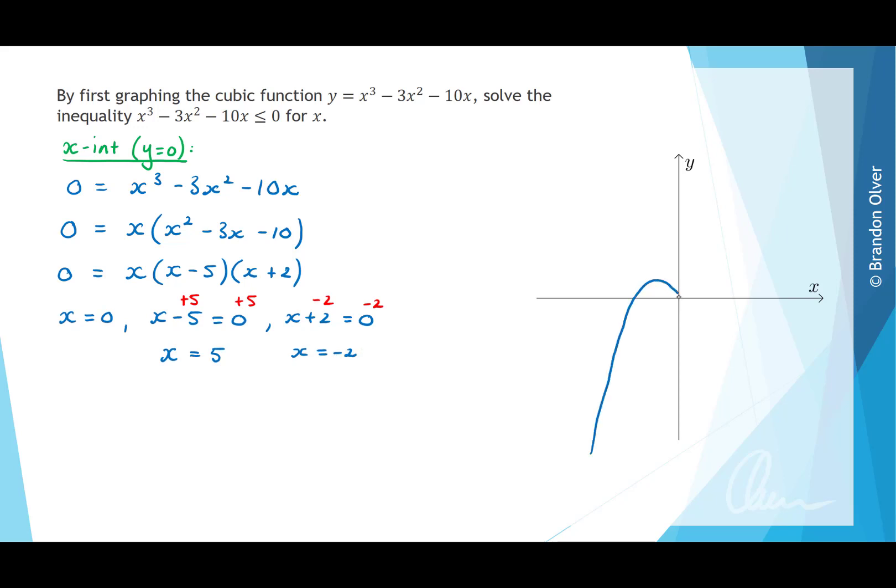So this is a positive cubic graph, so it's going to look something like this. So this x-intercept here is at negative 2 comma 0. This x-intercept is at 0 comma 0. And this x-intercept is at 5 comma 0.